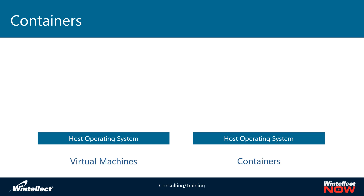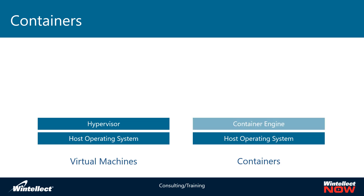The next layer on a virtual machine stack is the hypervisor, and the hypervisor is what provides the hardware abstraction for the virtual machines to run. Similarly, in the container context, there is the container engine. The container engine is responsible for providing all the abstractions from the host operating system to the container, so the containers will run.